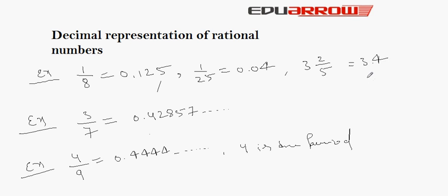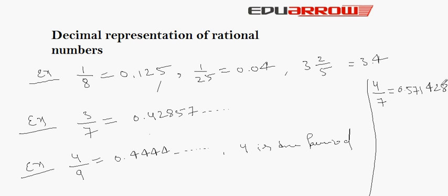Now, of a similar type, we see another example. If we divide 4 by 7, the result is 0.571428. Here, 0.571428 repeats again and again. So 571428 is the period.